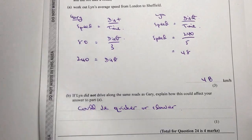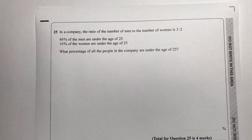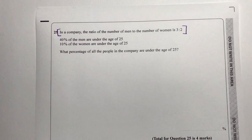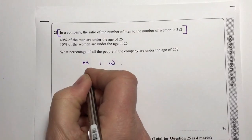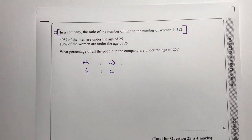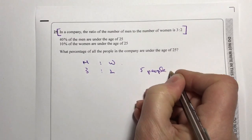Moving on to question 25, which on the surface is dealing with ratios. We've got the situation where the ratio of men to women in a company is 3 to 2. Let's just stop and write that in a format that works for maths: men to women is 3 to 2, meaning three men for every two women. So if the company employed five people, three of them would be men and two would be women.